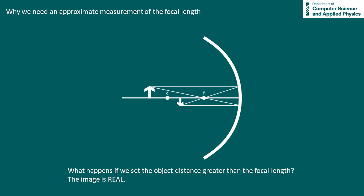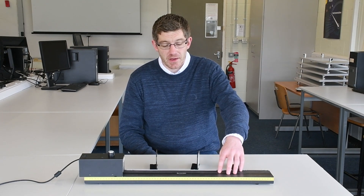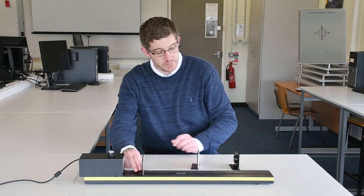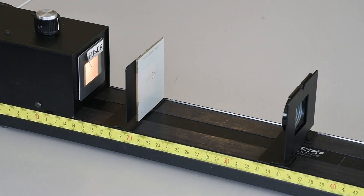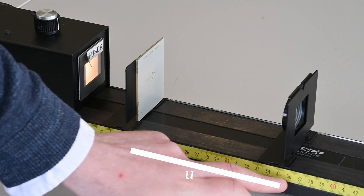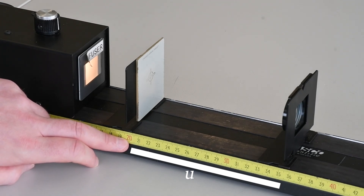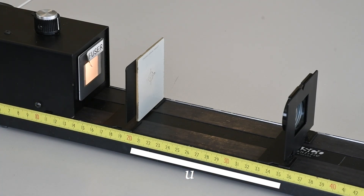To accurately determine the focal length of our mirror, our apparatus consists of an optical table, our light box, our target as the object, our concave mirror, and a viewing screen to capture the image. From our approximate measurements we know that the focal length is about five centimeters, so I've set the object distance — the distance from the target to the mirror — to be 15 centimeters. On our optical table we have a scale: the position of our target is 20 centimeters and the back of the mirror is at 35 centimeters, giving a difference of 15 centimeters.